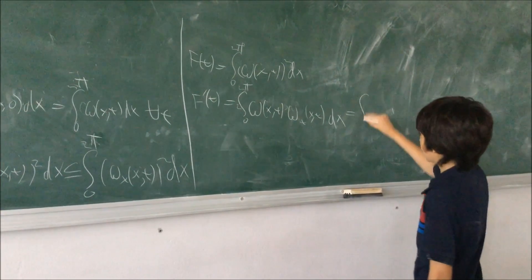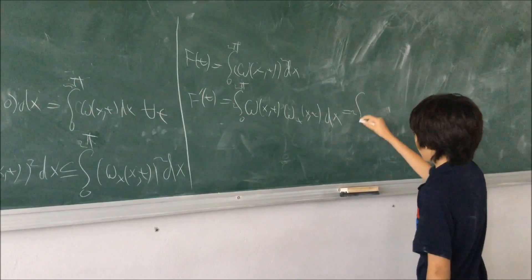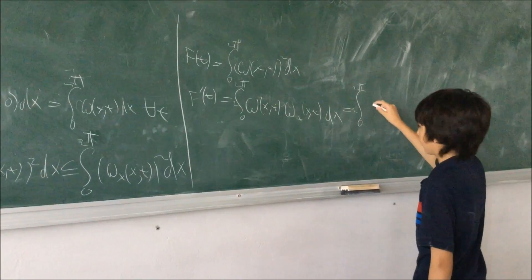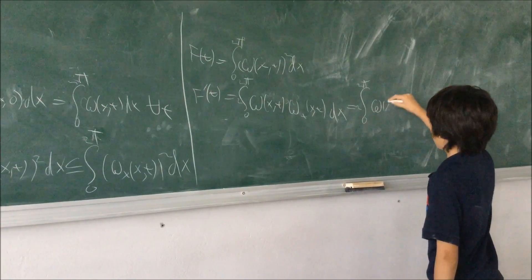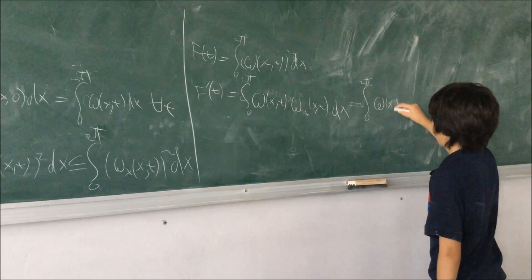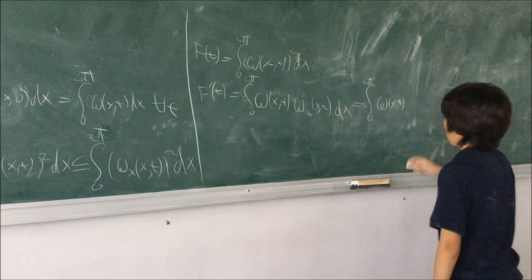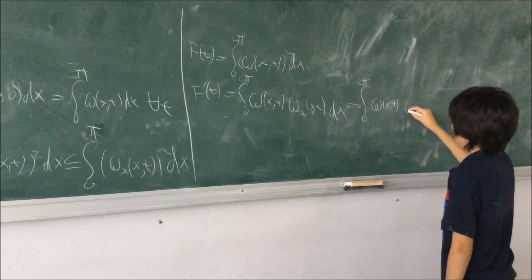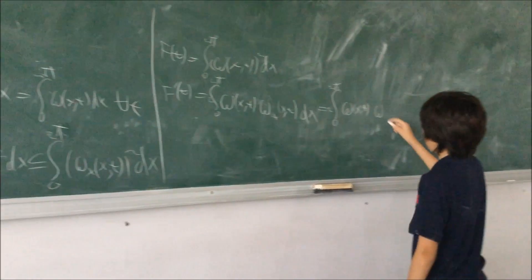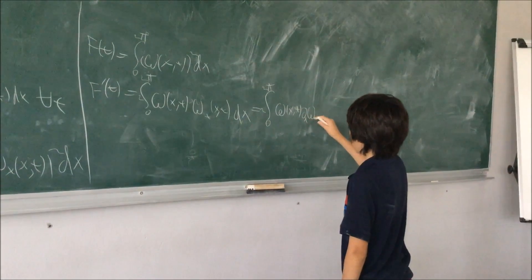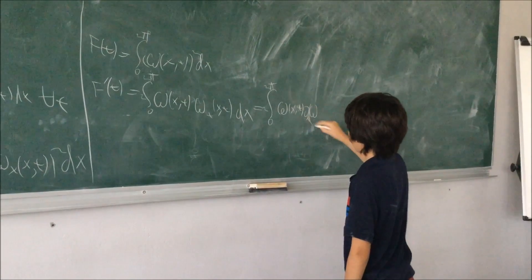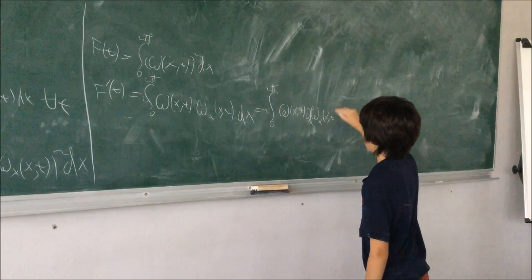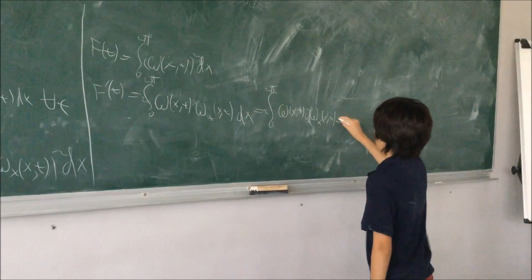Now, using the equation, we know that this is equal to two times the integral from zero to two pi of omega of x, t times... the integral from zero to two pi of omega of x, t times...